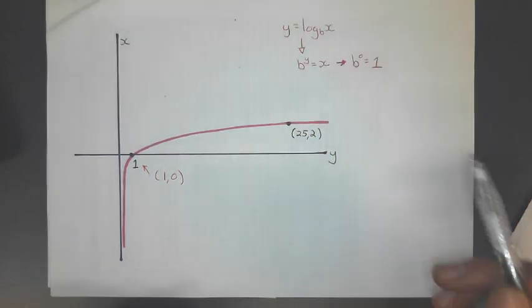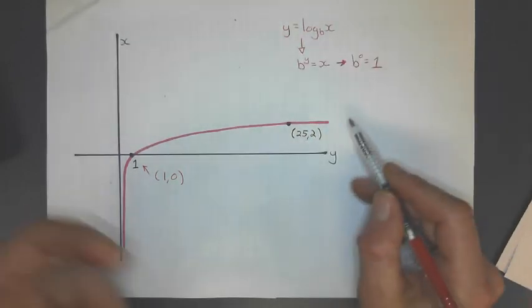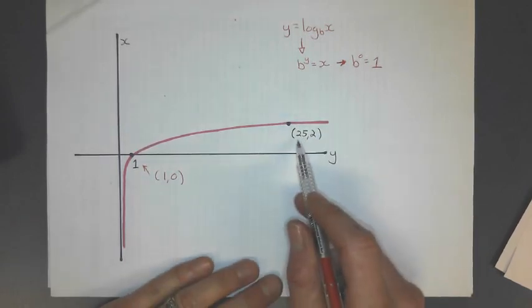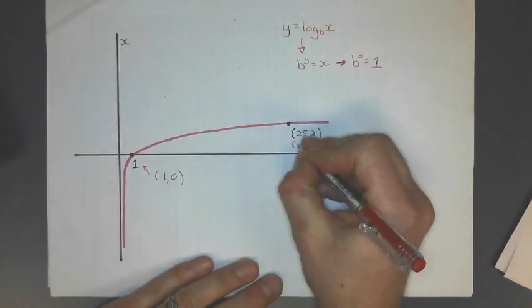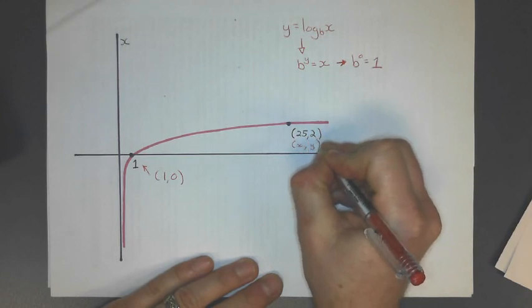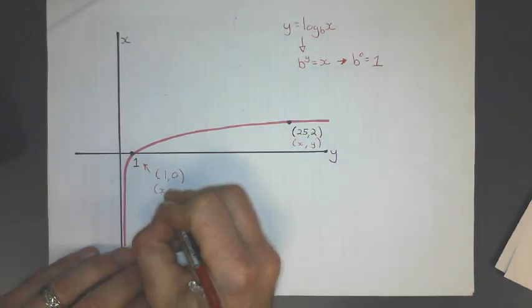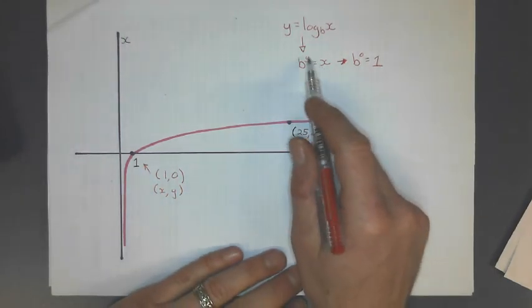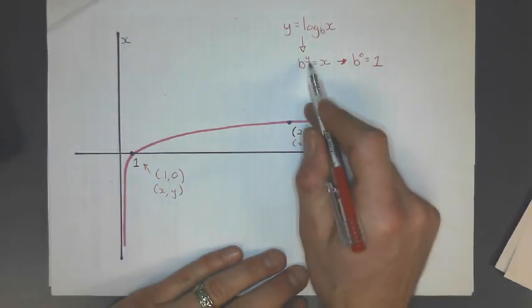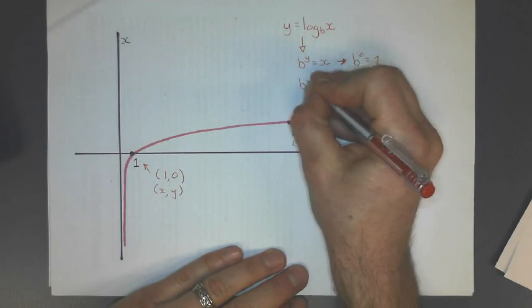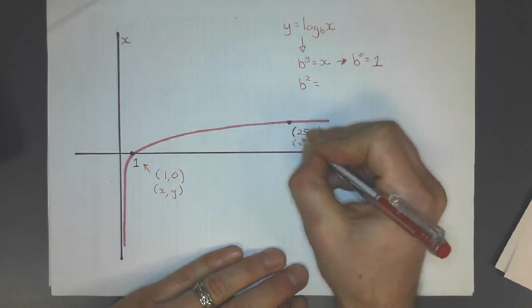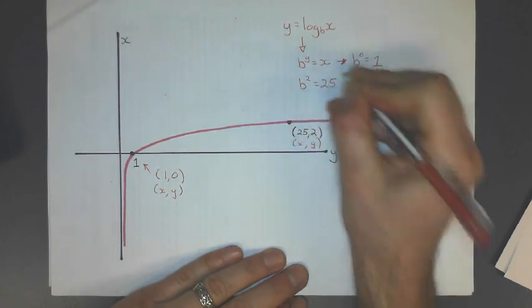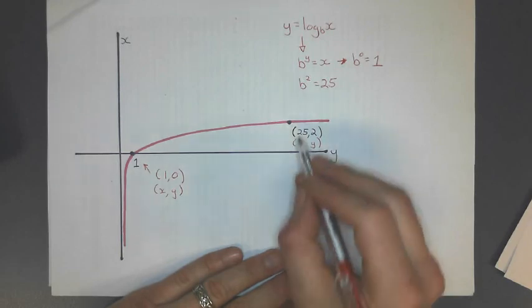So what I need to do is put some other point in there to solve for b. And I'll put this one in here, changing, remember, this is x, and that's y, just like that's x and y. That's the x-intercept of 1. And I substitute those in there, these guys in there, and solve for b. So I'd get b squared equals 25. Okay, and fair enough, easy to solve.